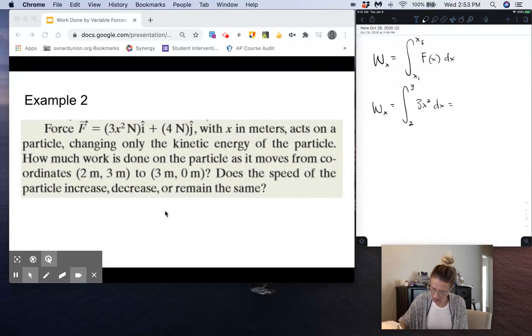So here we take that exponent, add 1 to the exponent which becomes 3, and then divide that whole thing by 3. So 3 divided by 3 is just 1 and we get x cubed. We're evaluating this from 2 to 3.